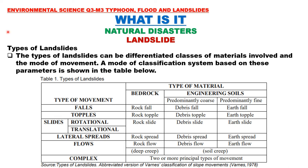Let's discuss the types of landslides. The types can be differentiated by the classes of materials involved and the mode of movement. From the classification table, the types of movement include: falls, topples, slides (which can be rotational or translational), lateral spreads, flows, and complex. The type of material is further classified as bedrock or engineering soils.